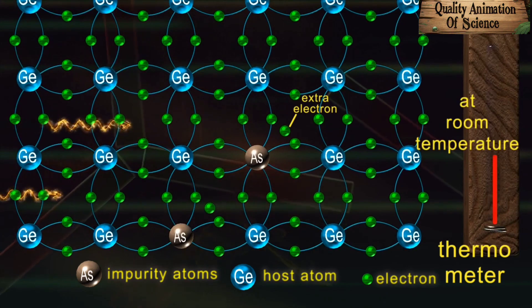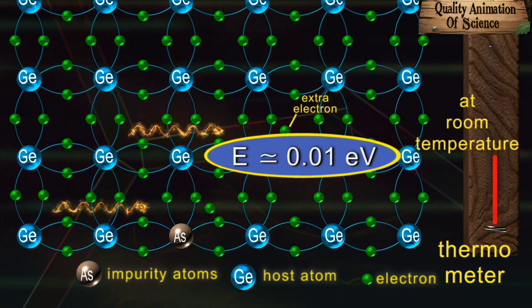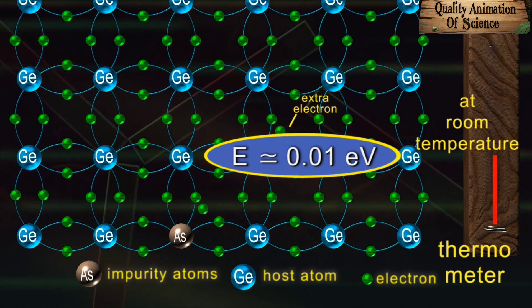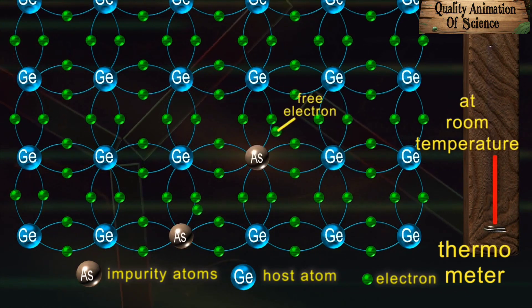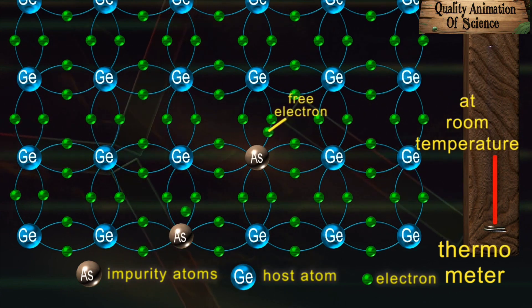If this extra electron receives an amount of energy as small as 0.01 eV, it can behave as a free electron. This much energy is readily available from the thermal energy at room temperature.